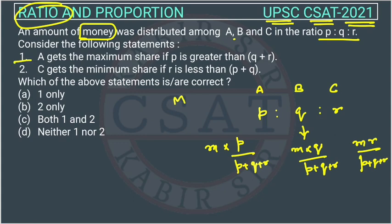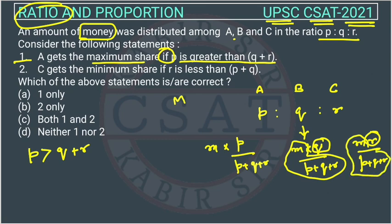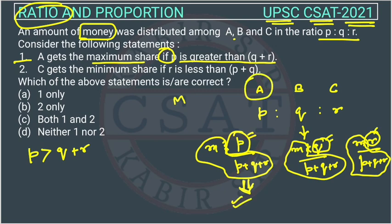Now, the first statement is A gets the maximum share if P is greater than Q plus R. So the statement is saying P is greater than Q plus R. See, this thing is common between all three, the denominator. So this won't make any difference. So what will make difference? This figure will make difference, P, Q, R. So P is greater than Q and R combined. So it means P is the largest. So if P is the largest, the portion of P will also be largest. If P is the largest, then the portion of A will be largest. So he will receive the largest amount of money. So statement A is right.